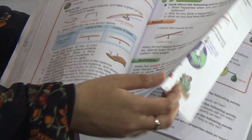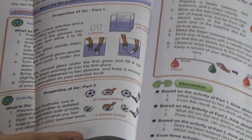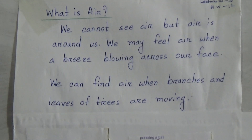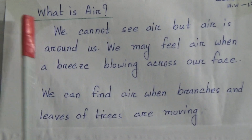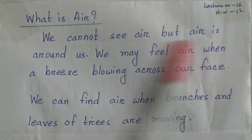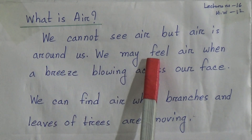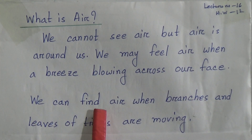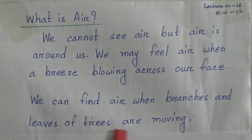Our chapter, Matter, starts from page 40, and today we will read from page number 44. I have written all topics from page number 44 to 46 here. From the beginning of page 44: what is air? We cannot see air, but air is around us. We may feel air when a breeze is blowing across our face. We can find air when branches and leaves of trees are moving.